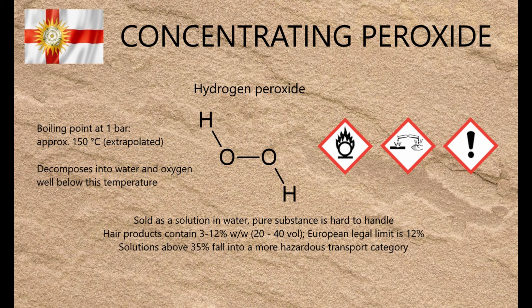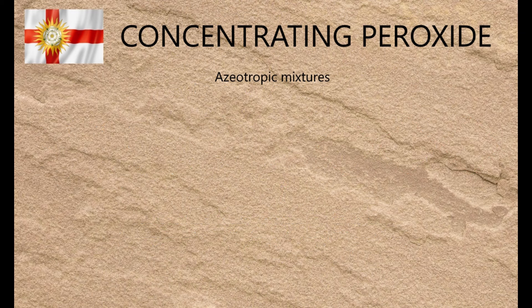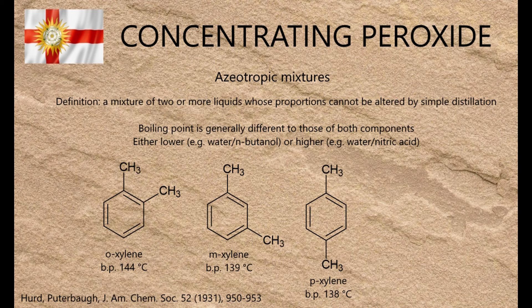There are two ways this can be done: vacuum distillation, and cold distillation with a substance that forms a low-boiling azeotropic mixture with water. In 1931, Hurd and Poonterbohr considered this problem and came to the conclusion — why not do both? They published a paper detailing their findings, and that paper is the basis of the method I'll now demonstrate.